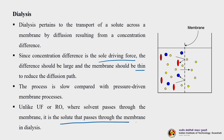Unlike ultrafiltration and reverse osmosis, where the solvent passes through the membrane, in dialysis it is the solute that passes through. In ultrafiltration and reverse osmosis, the solvent is pushed through the membrane, so the permeate contains water or solvent, and solutes are rejected at the membrane surface. In dialysis it is the reverse — the solutes pass while the solvent is held at the feed or retentate side.